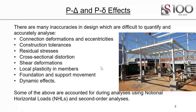There are many inaccuracies in design which are difficult to quantify and accurately analyze. Connection deformations and eccentricities — even in the simple structure shown here, the beams don't tie in exactly at the center of the column, so they will introduce a slight moment. They actually made a mistake and cast the concrete too low, then had to modify it afterwards, leading to slight imperfections in the alignment of the columns. There can also be construction tolerances, columns not being perfectly straight, bolts, connections, and various other things.